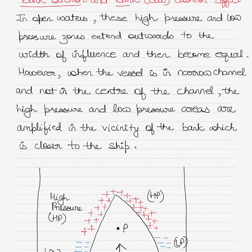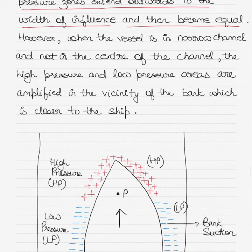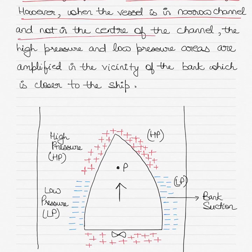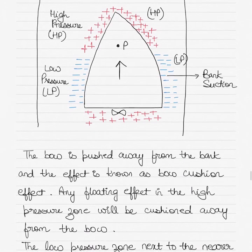In open waters, the high pressure and low pressure zones extend outwards to the width of the influence and then become equal. However, when the vessel is in narrow channel and not in the center of the channel, the high pressure and low pressure areas are amplified in the vicinity of the bank which is closer to the ship. This is shown in the diagram below.